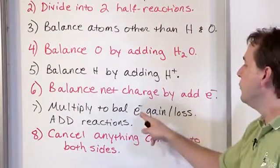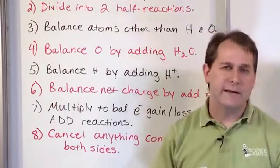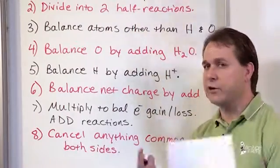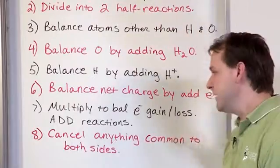Then we're going to balance the electrons gained in one reaction by the electrons lost in the other reaction, and we're going to do that by multiplying and then adding the reactions together.